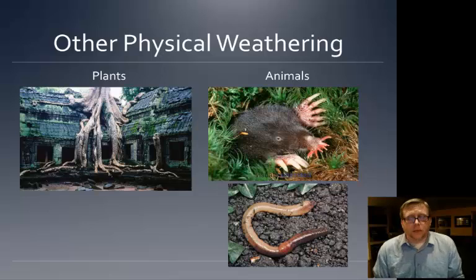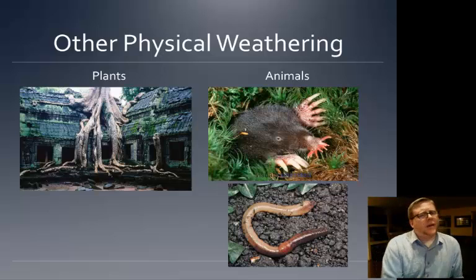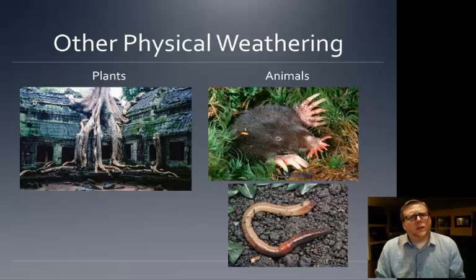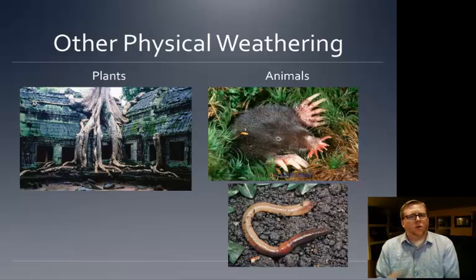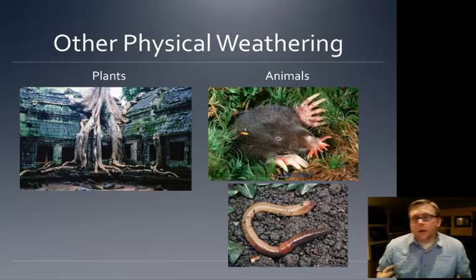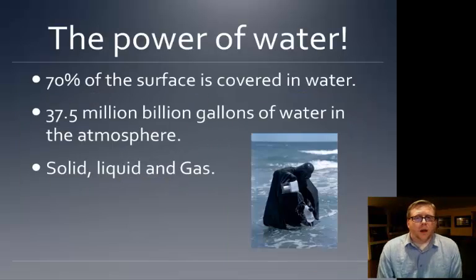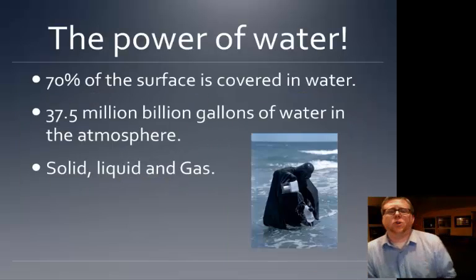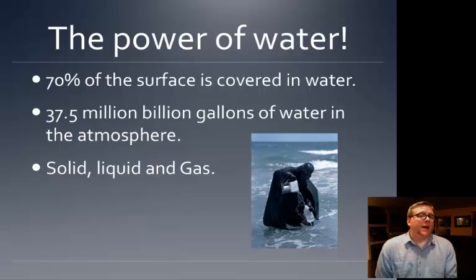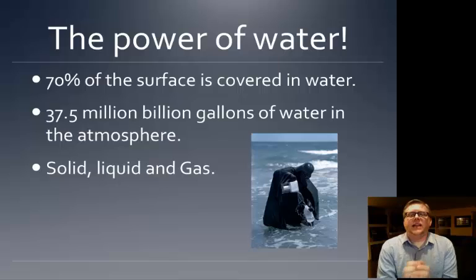We have plants, animals, and humans. There are other types I don't have slides for, but they're fairly minor. The sun can heat up one side of a rock and actually crack it in half — that's physical weathering. Wind can move rocks and make them smaller. But really, the vast majority of weathering happening on our planet is by the power of water.